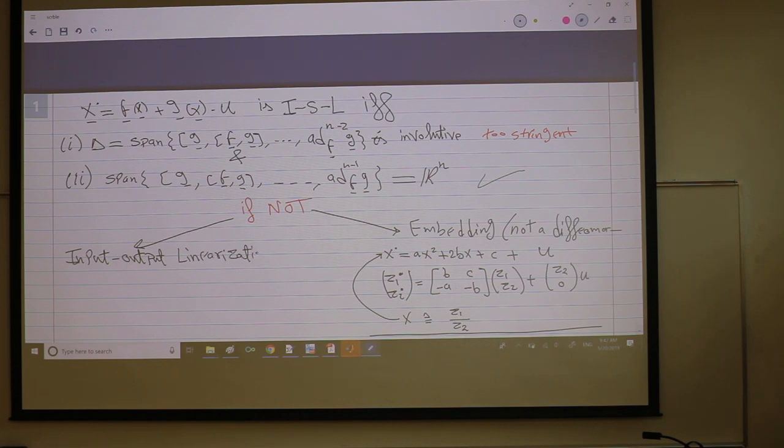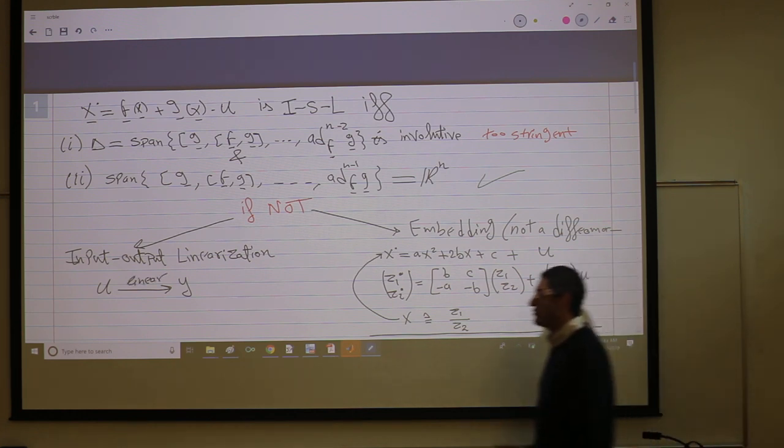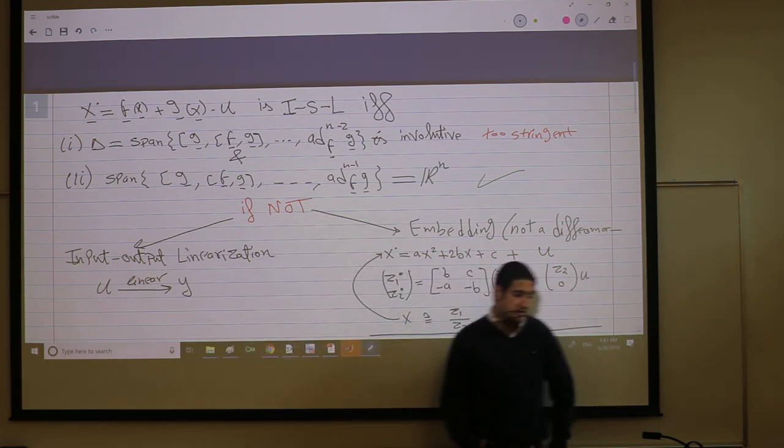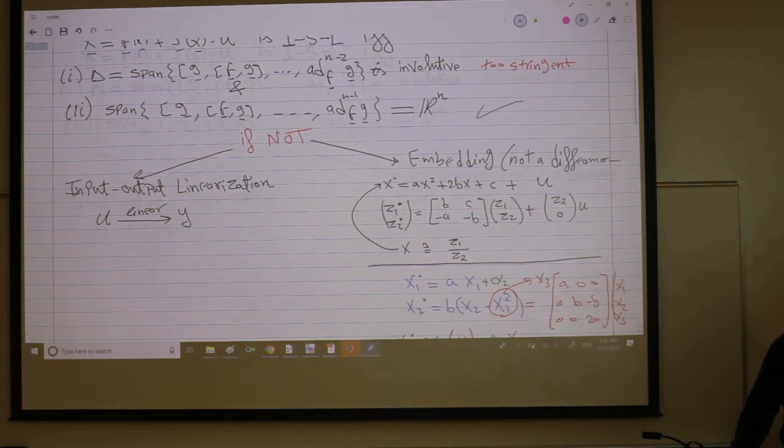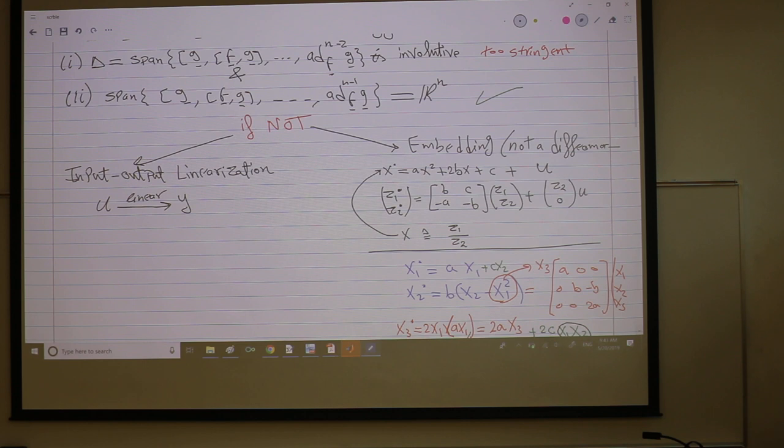So here we're not interested in input state - not linearizing the full state, but input output linearization. We're linearizing part of the system. In particular, we're linearizing the relation between the input and the output. We hope to achieve a linear dynamics between the input and the output, not between the input and the full state like we did before.